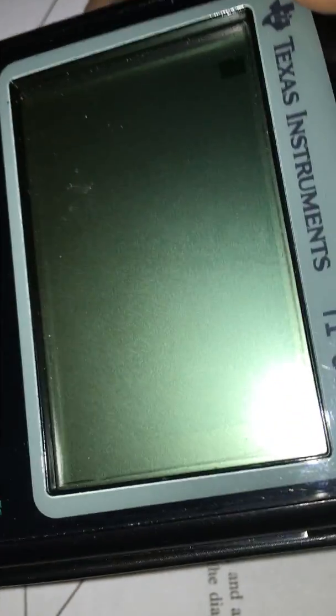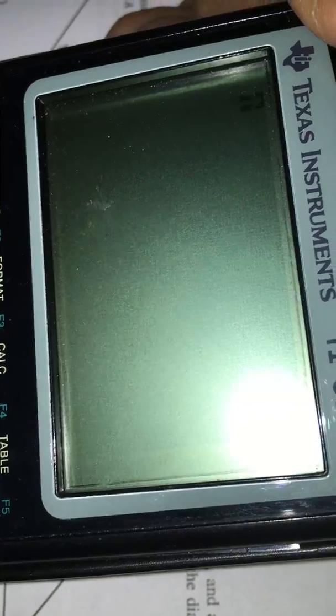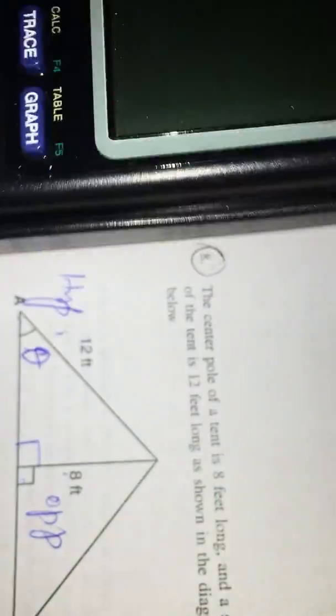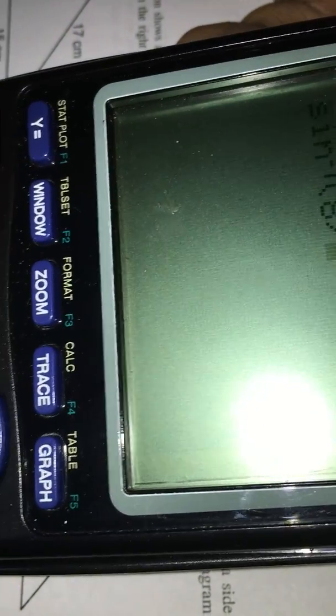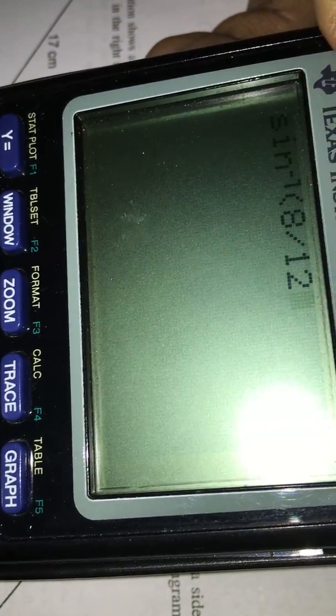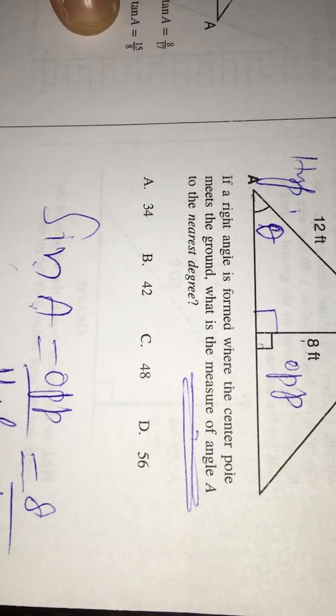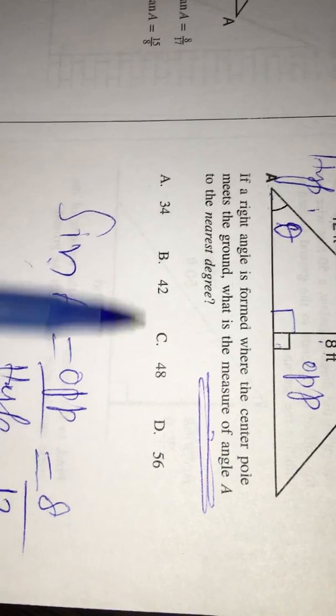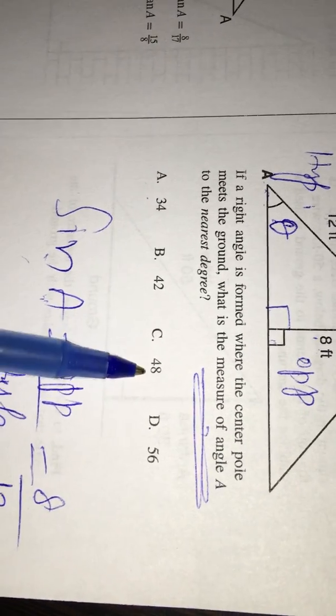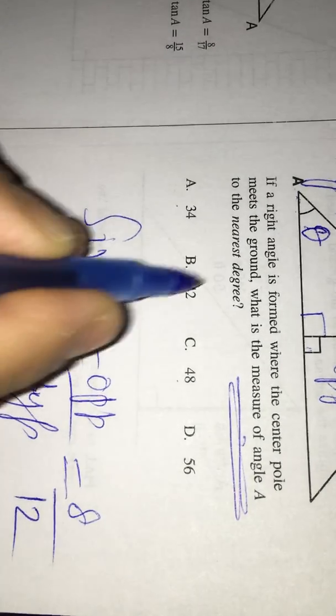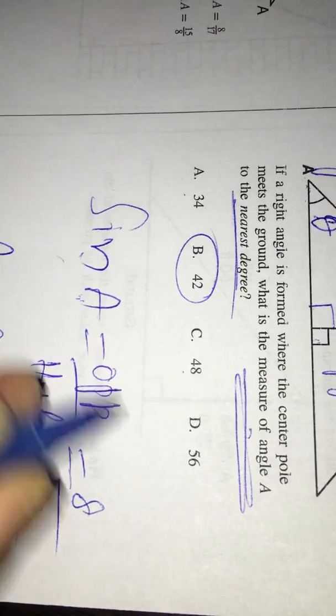I am erasing everything. And now, in order to get sine inverse, I have to press 2nd and then sine. See, I got sine inverse. And I have to write 8 over 12, so 8 divided by 12. And close the parentheses and push enter. I got 41.8, 41.8 degrees. And if I check 34, 48, 56, they are very far away from 41.8. The rounded to nearest degree is 42, which is B.